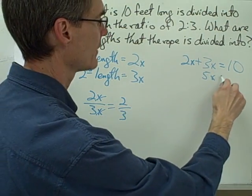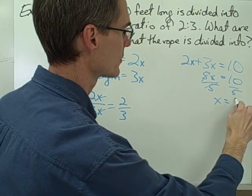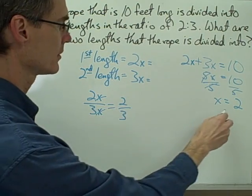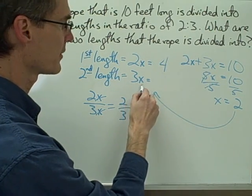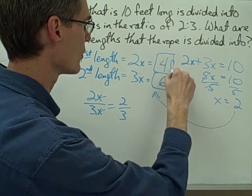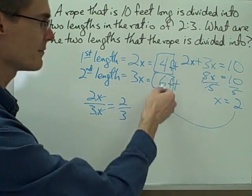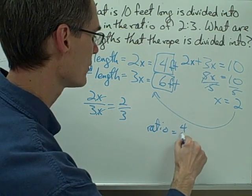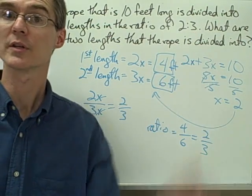Now I can solve my equation: 5x equals 10. Divide both sides by 5 and I have x equals 2. Now that I know the value for x, I can plug it in for my two lengths. 2 times 2 is 4 and 3 times 2 is 6. So the two lengths of my rope are 4 feet and 6 feet. Notice that the ratio of the two lengths, 4 to 6, reduces to 2 to 3, which is what we already knew the ratio was.